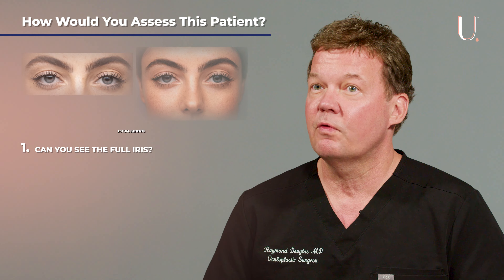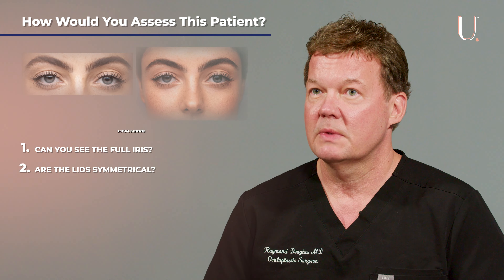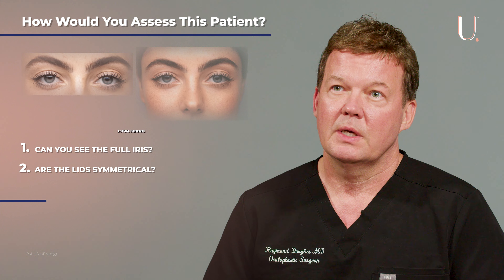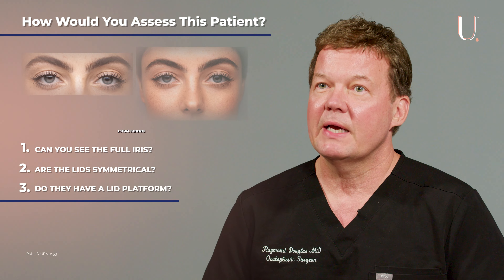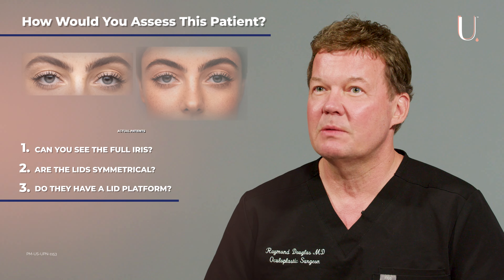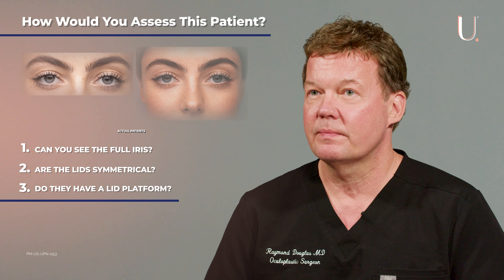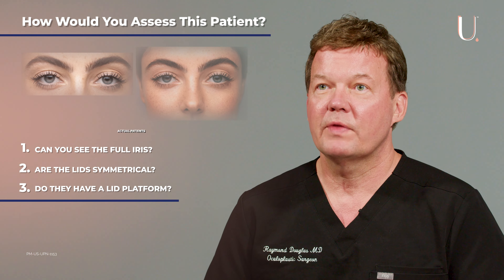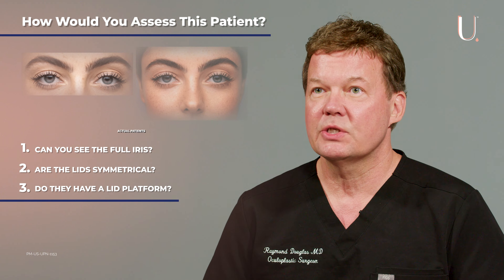So the question is, can you see the full iris? Not on this patient. Are the lids symmetric? Maybe just a little bit asymmetric here. Do they have a high lid platform? They do — more of the upper eyelid is showing.